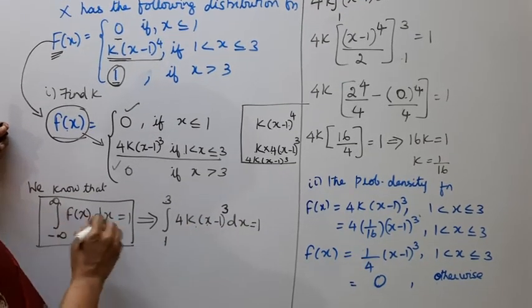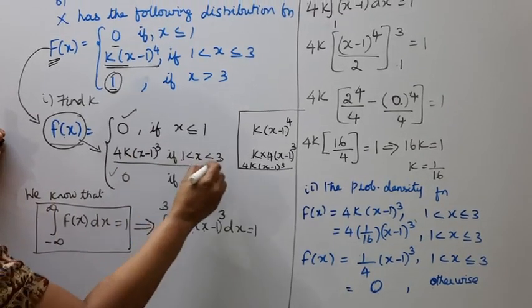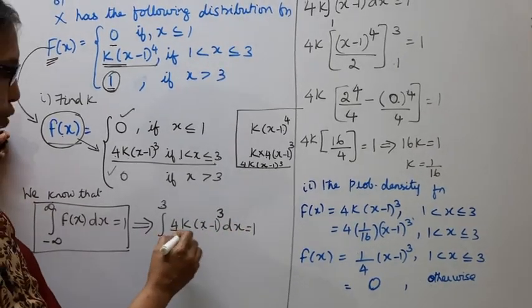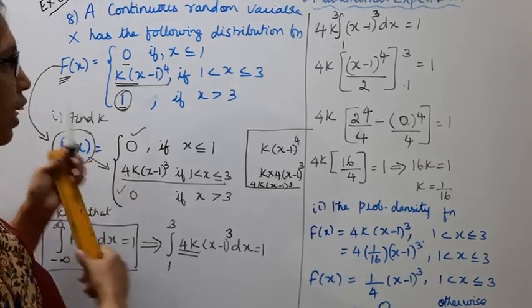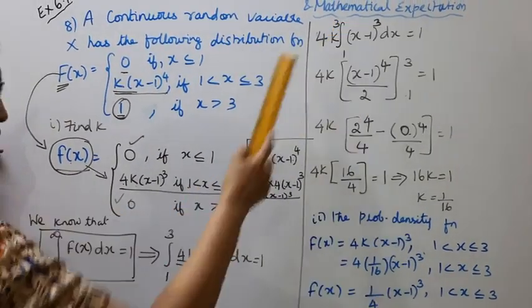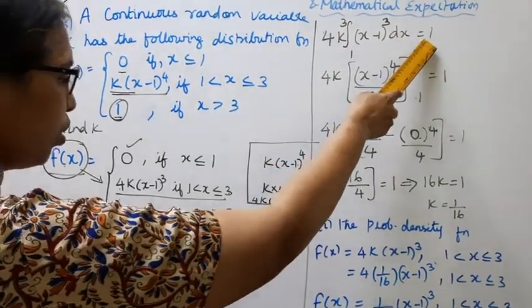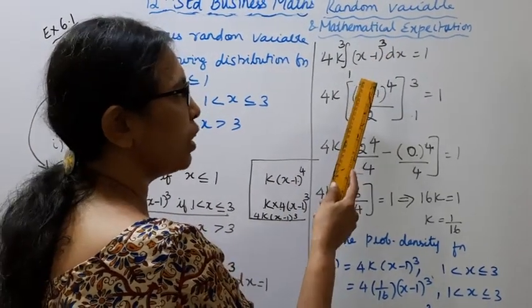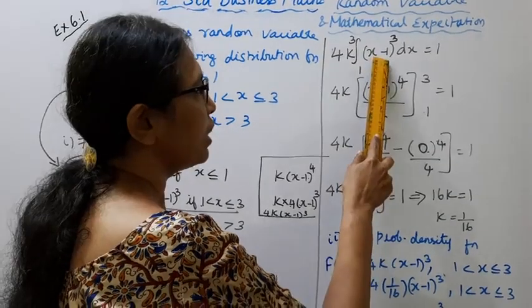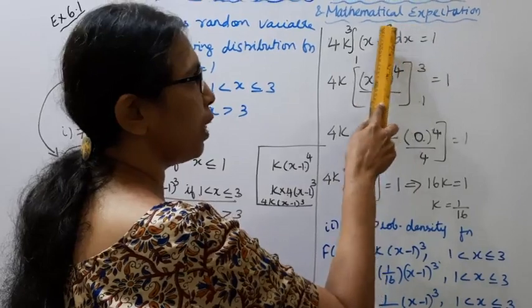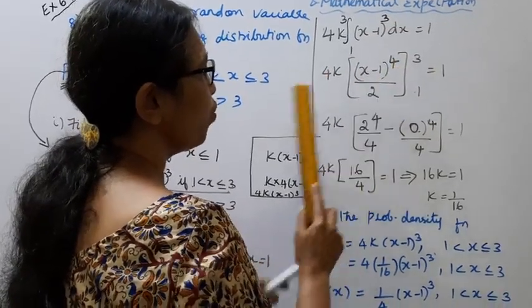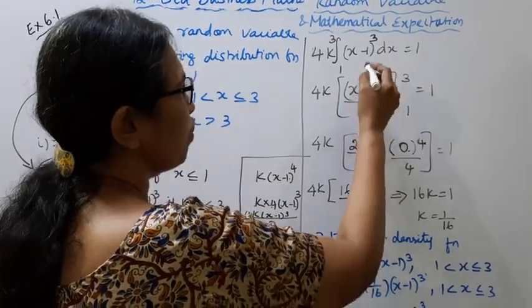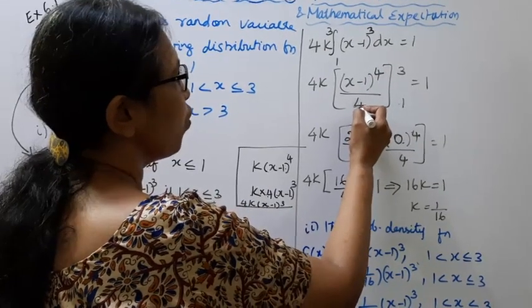The integral from 1 to 3 of whole cube dx equals 1. Now k, 4k times x minus 1 whole cube. That's how we integrate the whole cube. Integrate the whole power 3 plus 1 by 3 plus 1, 4 by 4, 3 plus 1 divided by 3 plus 1, x minus 1 whole power 4 by 4. Limits are 1, 2, 3 equal to 1.